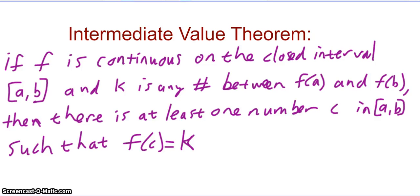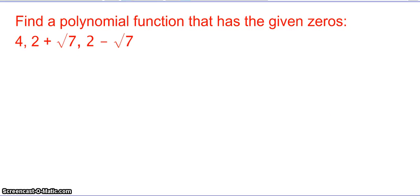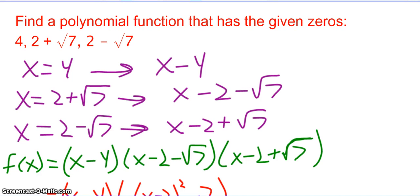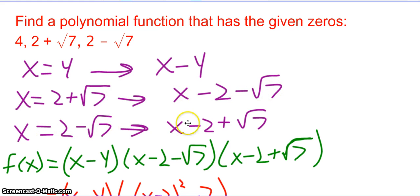Now let's go back to finding polynomials. Find a polynomial function that has the given zeros: 2 plus root 7 and 2 minus root 7. If 2 plus root 7 is a zero, then x minus 2 minus root 7 is a factor. And if 2 minus root 7 is a zero, then x minus 2 plus root 7 is a factor. These are my factors.